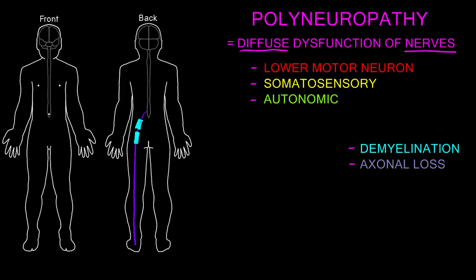Whether a polyneuropathy is primarily demyelinating or primarily causing axonal loss, we can still see the same functional abnormalities, because with both, information is not able to travel through nerves of the peripheral nervous system. That may affect the functions of the lower motor neuron axons, the somatosensory axons, the autonomic axons, or all of them together.